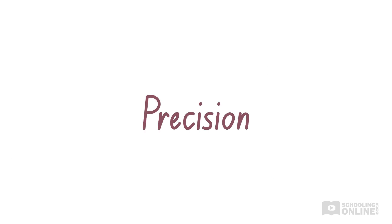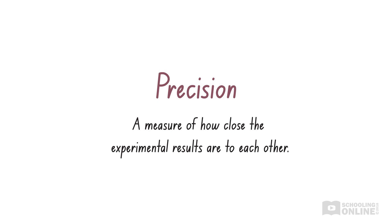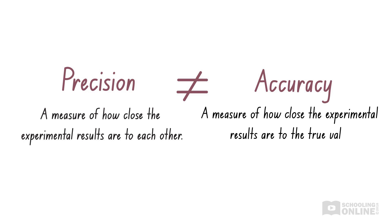Let's discuss the next aspect of reliability, which is precision. Precision is a measure of how close the experimental results are to each other. When discussing experimental results, use the term precision with caution. Even though precise and accurate are synonyms in normal vocabulary, they are completely different things in science. Accuracy is a measure of how close the experimental results are to the true value, whereas precision is a measure of how close the experimental results are to each other. Make sure you don't confuse these.